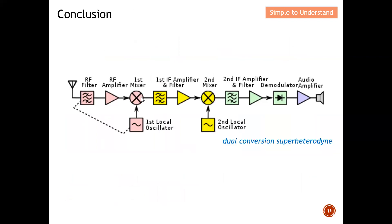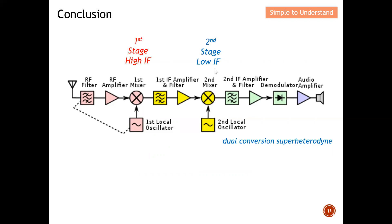In conclusion: the first mixer should have a high IF — this reduces stress on the RF filter and rejects the image because it is far from the desired band. The second stage should have a low IF — this accommodates more channels in a given spectrum, allowing more FM broadcasts. This is why we need a dual conversion superheterodyne receiver: one stage with high IF for image rejection, another with low IF for channel capacity. Please like and subscribe — thank you!